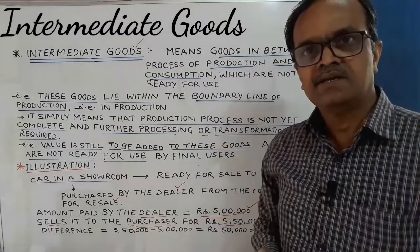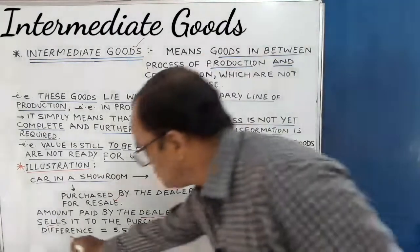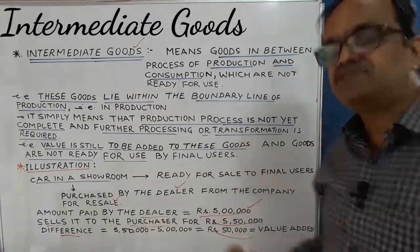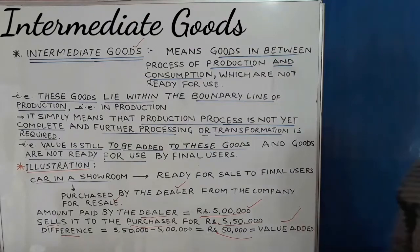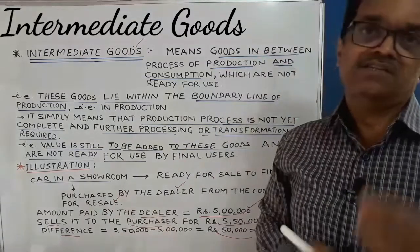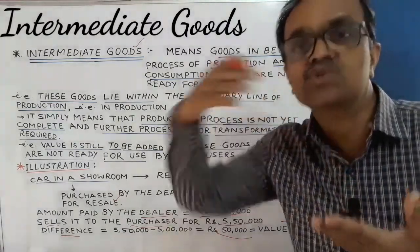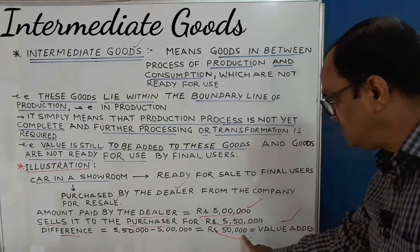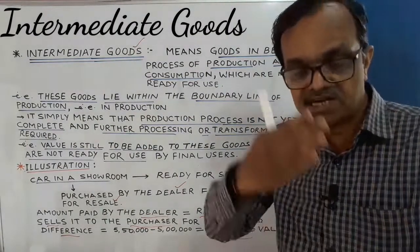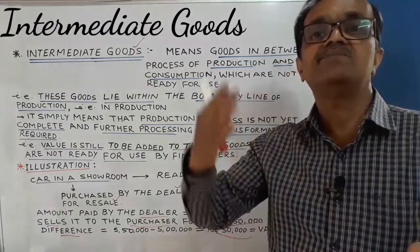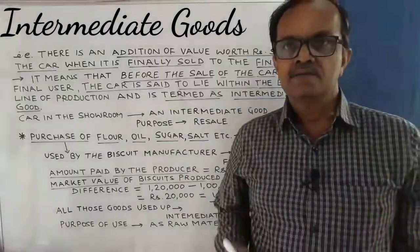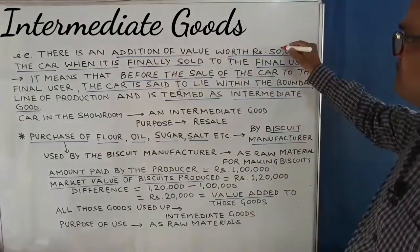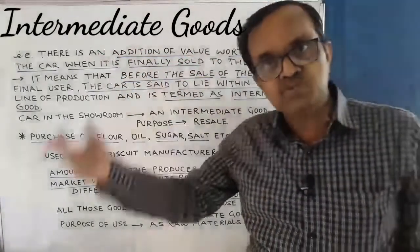The dealer sells the car to a customer for Rs. 5,50,000. In between, what is the difference? That is Rs. 50,000. And this Rs. 50,000 is the value added to the product during sale. When it is actually sold to the final purchaser, there is an addition of value worth Rs. 50,000 to the car.